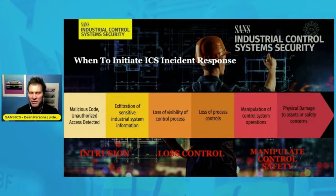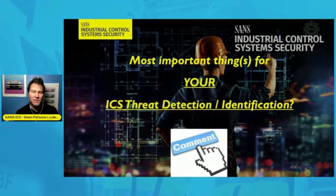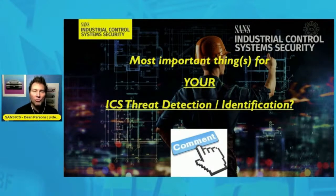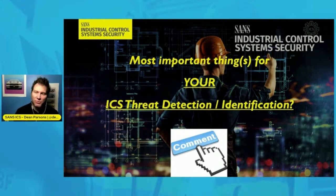Keeping these methodologies in mind for threat detection and understanding where you would initiate incident response for your control system — I want to ask you guys a question, please put your comments in the comments section. What do you think is the most important for any industrial control system threat detection? Is it visibility into the network? Is it visibility on endpoints? What technologies or processes may be the most important from your perspective? Put those comments in there and I will address those momentarily.